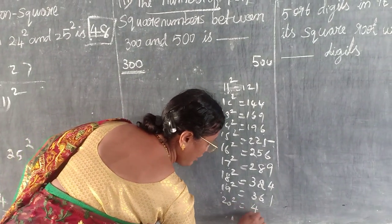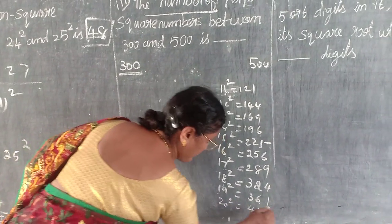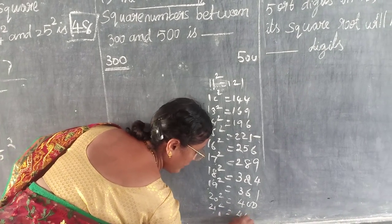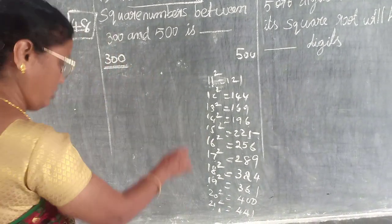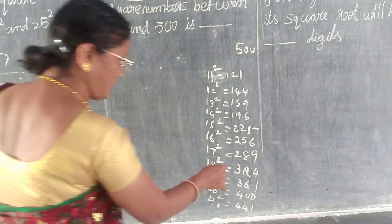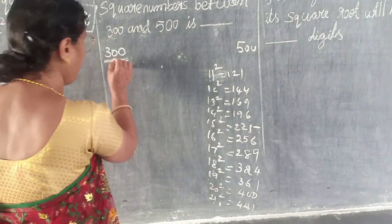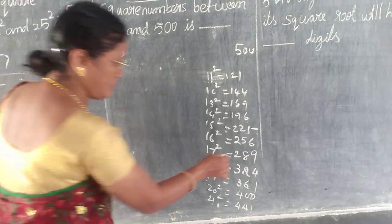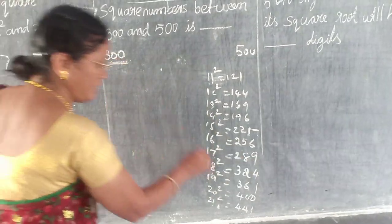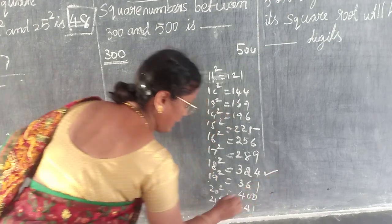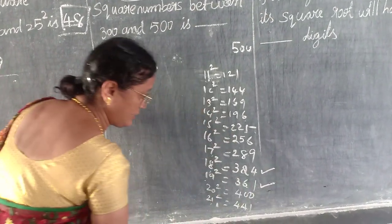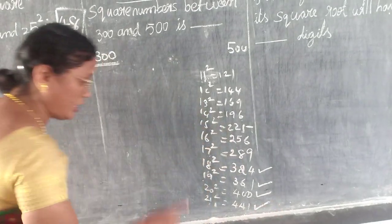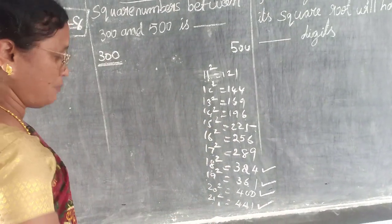20² is 400. 21² is 441. So like this it goes on. Now, between 300 and 500 — 289 falls below 300, so the next one is 324, then 361, then 400, then 441.